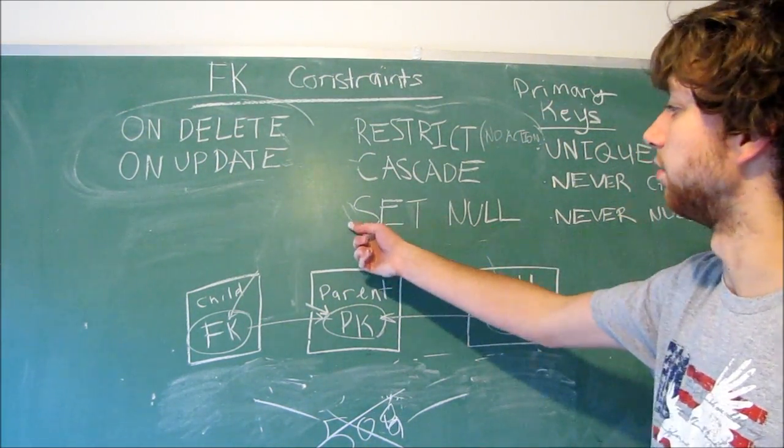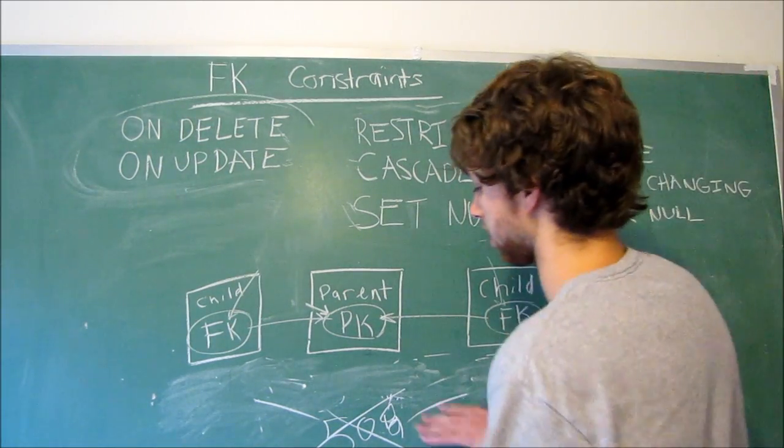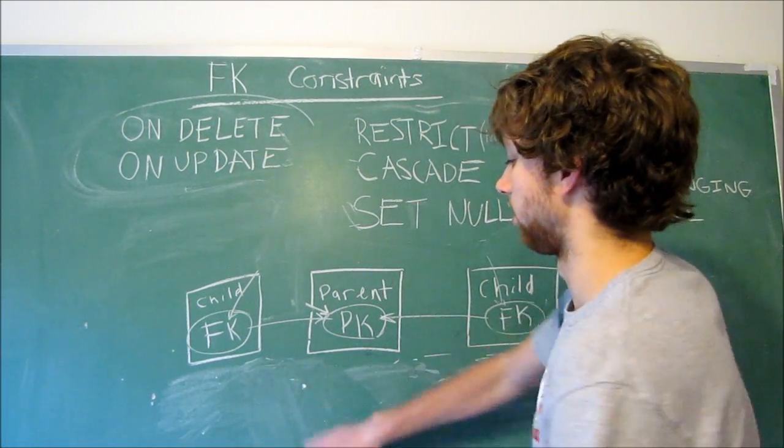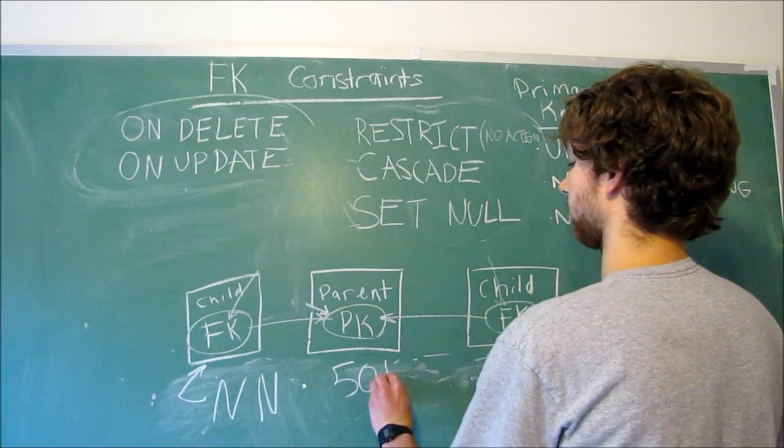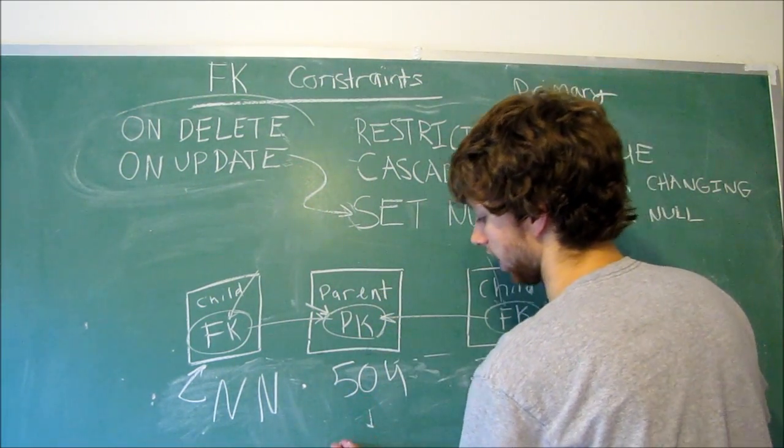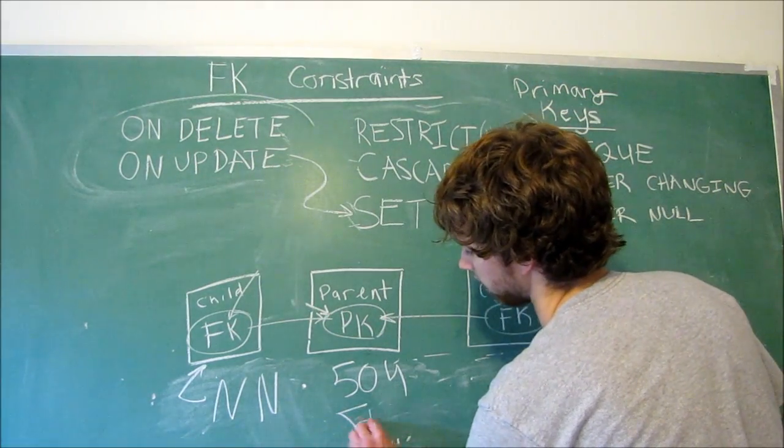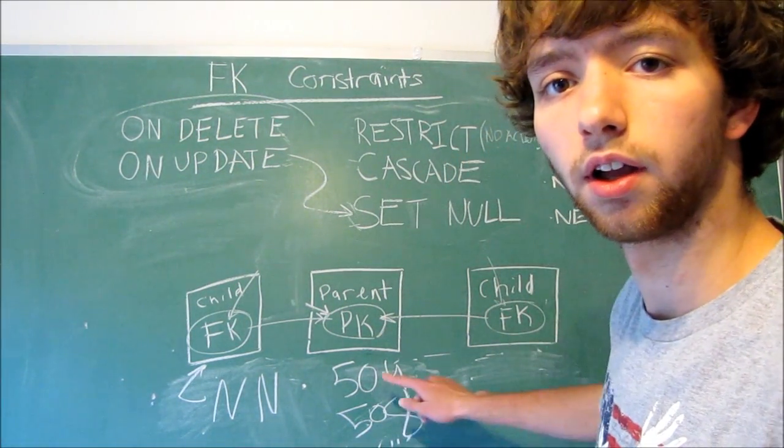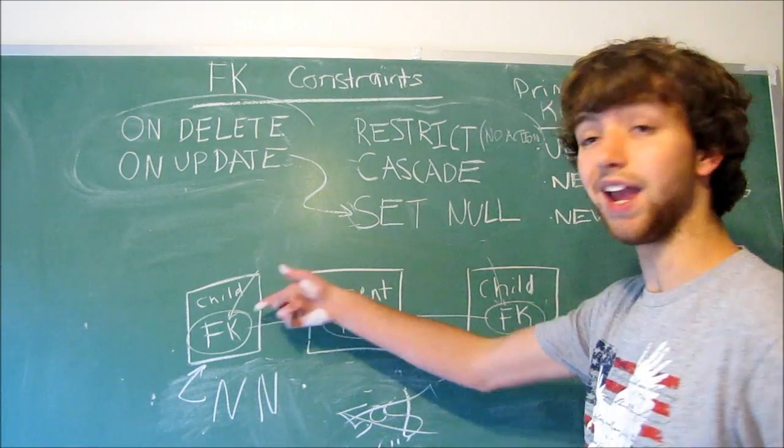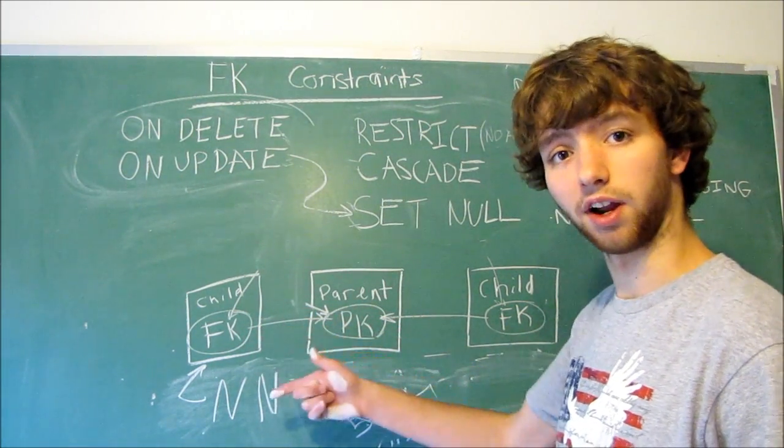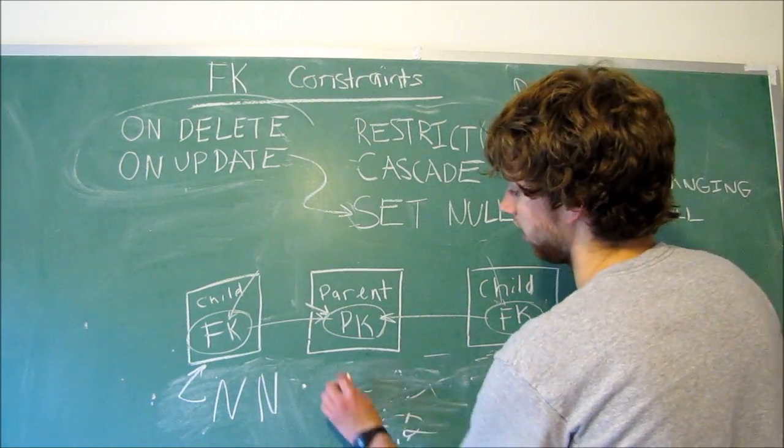All right. Now there's one important thing with SET NULL. The children have to have, they can't have, I should say, the NOT NULL characteristic. We talked about that in previous videos. I'm just going to put NN for short. If this is NOT NULL, and we update, if we have ON UPDATE SET NULL, and we update 504 to 508, if we change 504 to 508, and this is NOT NULL, it's going to be like, we can't do it because we can't set it to null because it has the NOT NULL characteristic, which means every single row has to have a value for that attribute or that column. So I'll give an error, and I'll go back to how it was.